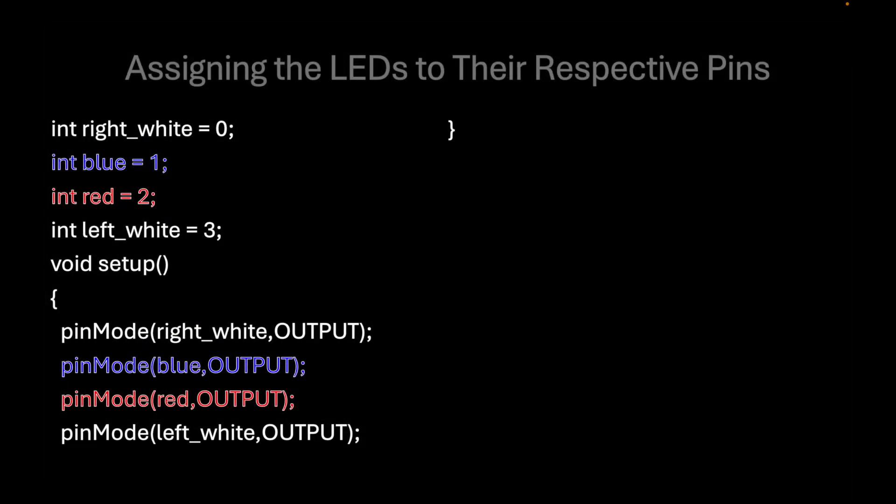After we have arranged the LEDs to their respective positions, we will program them using a software. We assign the left and right white LEDs with pins 0 and 3 — they're interchangeable because they are white LEDs. For the blue and red LEDs, they will be assigned as pins 1 and 2. All four LEDs will be assigned as outputs because they are signal lights on an airplane meant to display LED on and off.